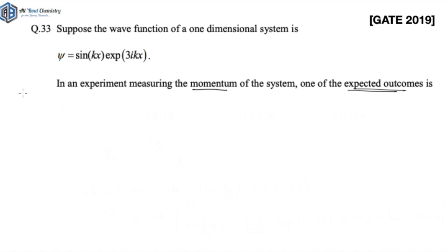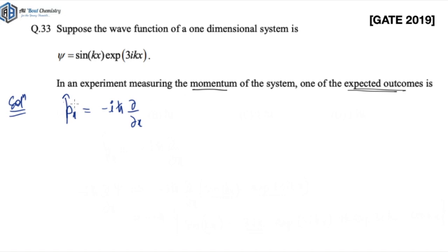Let's look at the solution. The usual way is to apply the momentum operator on this wave function. The linear momentum operator is given by p̂x = −iℏ(∂/∂x). I'm going to apply that on psi. So I get −iℏ times d/dx of sine(kx) times exponential(3i·kx). Since this is a product of two functions, I'll apply the product rule of differentiation.